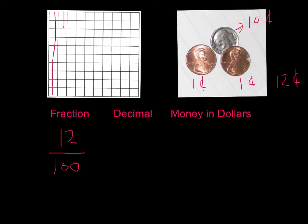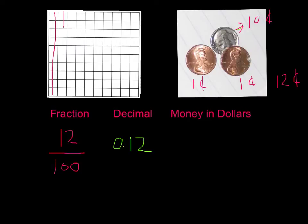Our decimal is going to be zero, because we don't have any full dollars. For tenths, we have one ten, so we write a one. Then, to represent our two cents, or two one-hundredths, we put in a two — for a decimal of zero point one two. In terms of money, we're talking in dollars, so we need our dollar sign, and we write zero dollars point one two for our twelve cents.